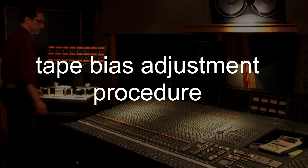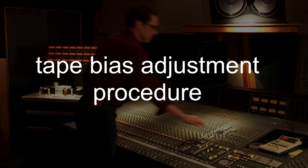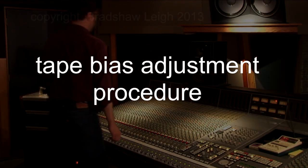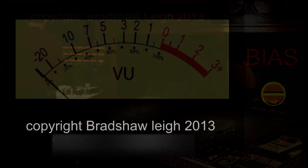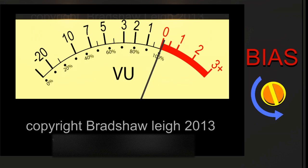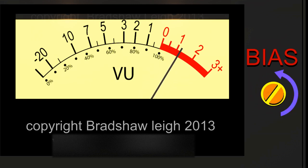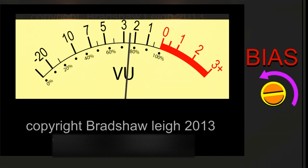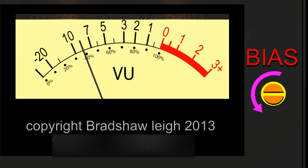After setting record level to 0VU using 1kHz, set your oscillator to feed your machine 10kHz. To adjust the bias, slowly turn down your bias level. The level may drop right away or it may first rise, but don't worry about that. Just keep turning your bias level down until the level drops about 10 dB.